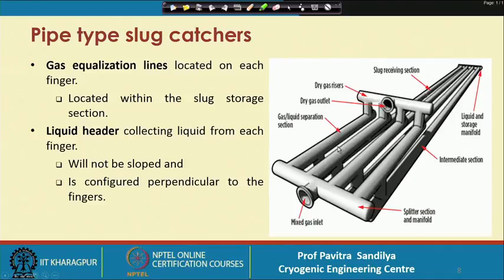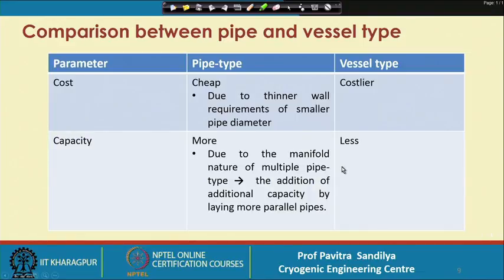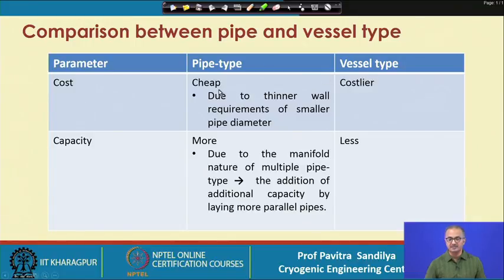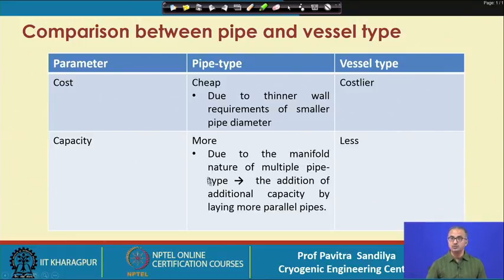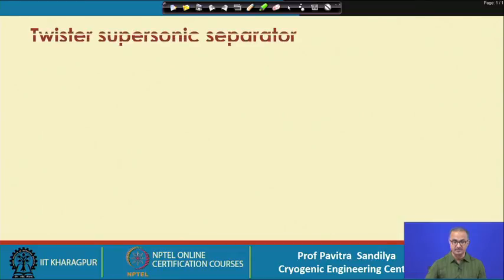Comparing pipe type with vessel type slug catchers, pipe type units are cheaper, can handle more gas, and their capacity can easily be enhanced by adding more parallel pipelines — that is, more finger assemblies.